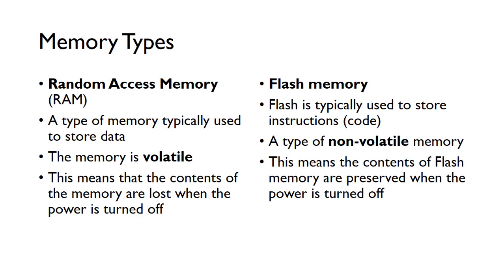We need to be aware of the different types of memory. There are two main types we're going to come across. We've got random access memory, or RAM - this is a type of memory typically used to store data. This memory is volatile, so what volatile means is that when the power is turned off, all the contents of the memory are wiped. We use RAM to store data.